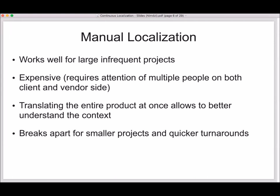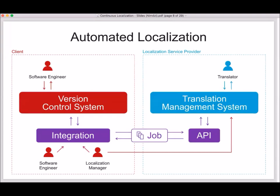Manual localization is expensive because it requires attention from multiple people. It really breaks apart for smaller projects and faster cycles. One good thing about manual localization is that if your orders are infrequent, you are usually translating the entire project at once — you send all the files belonging to a certain project, and with that you provide more context to translators. But as we move into a new era of software development when releases happen every month, sometimes every week — some companies publish new changes multiple times a day — clients wanted localization providers to provide some sort of automation.